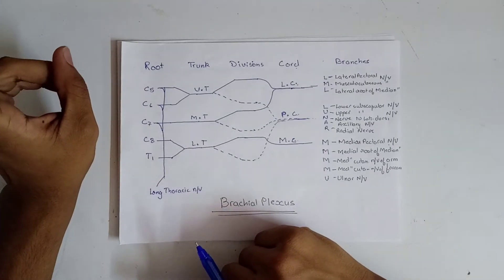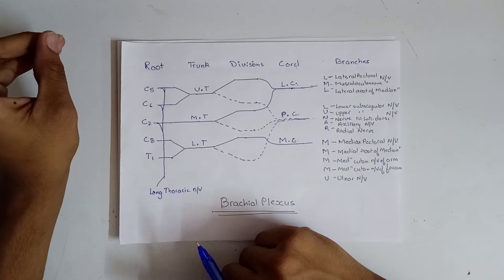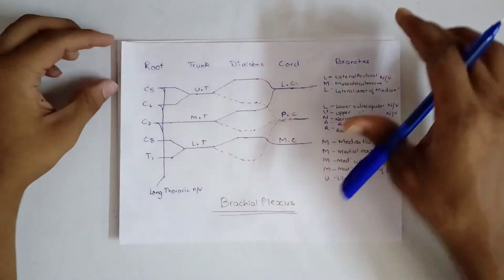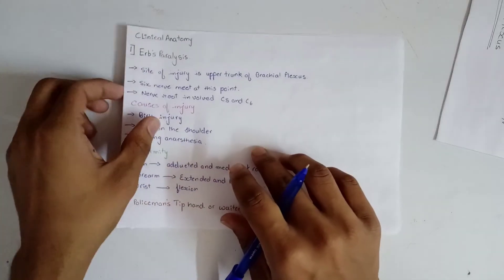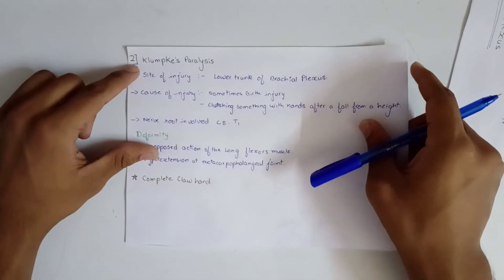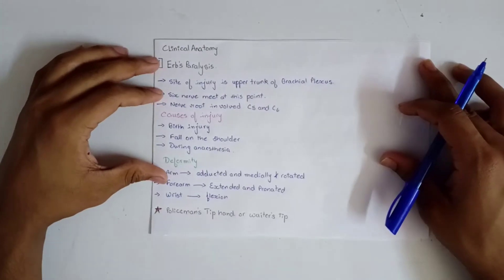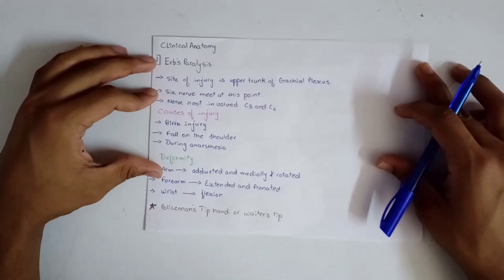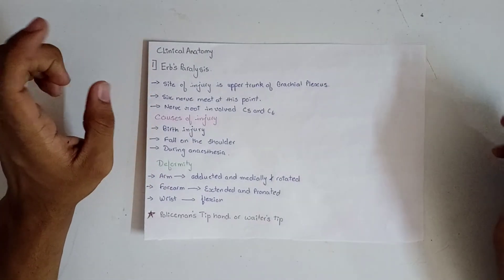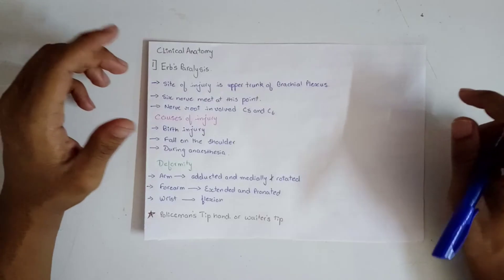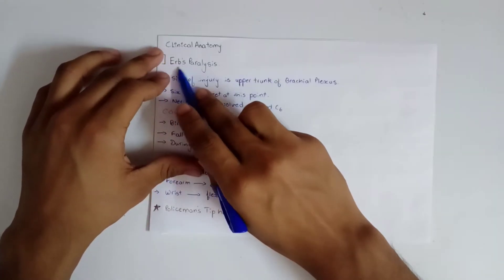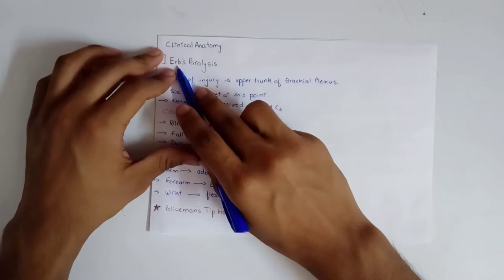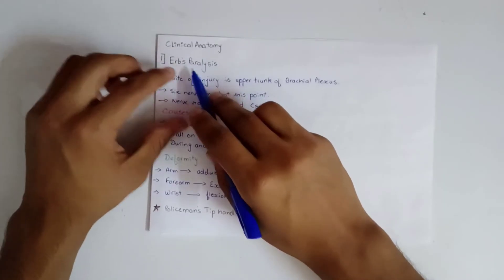There are mainly two clinical relations related to brachial plexus: Erb's paralysis and Klumpke's paralysis. One by one we will deal with both of them. Before starting, I would strongly recommend you to check out the first part of brachial plexus as this is closely related to that video. Erb's is the name of the scientist who discovered this type of paralysis.